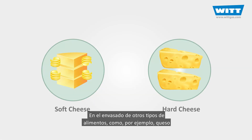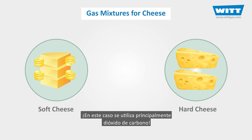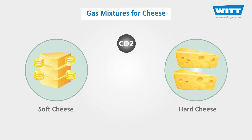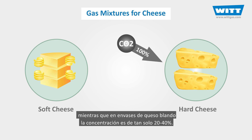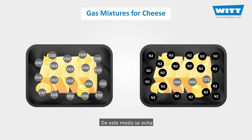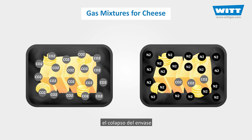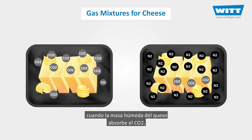In the packaging of some other types of foods, such as cheese, the mixture is completely different. In this case, carbon dioxide is used first and foremost. The carbon dioxide level in hard cheese packages is up to 100%, and for soft cheeses the level is usually restricted to 20 to 40%. The reason for this is to prevent the package from collapsing under atmospheric pressure as the carbon dioxide dissolves into the water content.